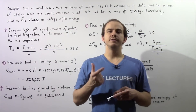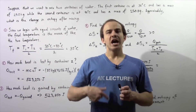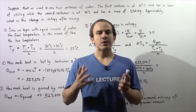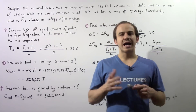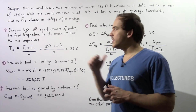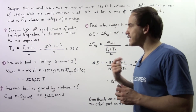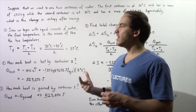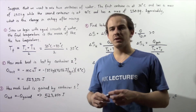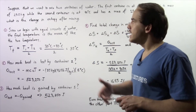In the previous lecture, we defined what entropy is and gave an equation that we can use to calculate entropy. In this example, we're going to use that equation to calculate the change in entropy of an isolated system.